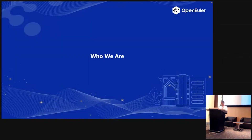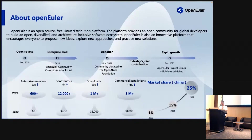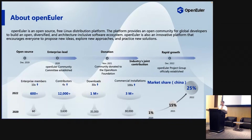For the first part - who we are. Most of you have already seen the huge blue exhibition board downstairs because we are from OpenEuler. OpenEuler is an open source, free Linux distribution platform. The platform provides an open community for global developers to build an open, diversified, and architecture-inclusive software ecosystem. OpenEuler is also an innovative platform that encourages everyone to propose new ideas, explore new approaches, and practice new solutions. Our community started in 2019.